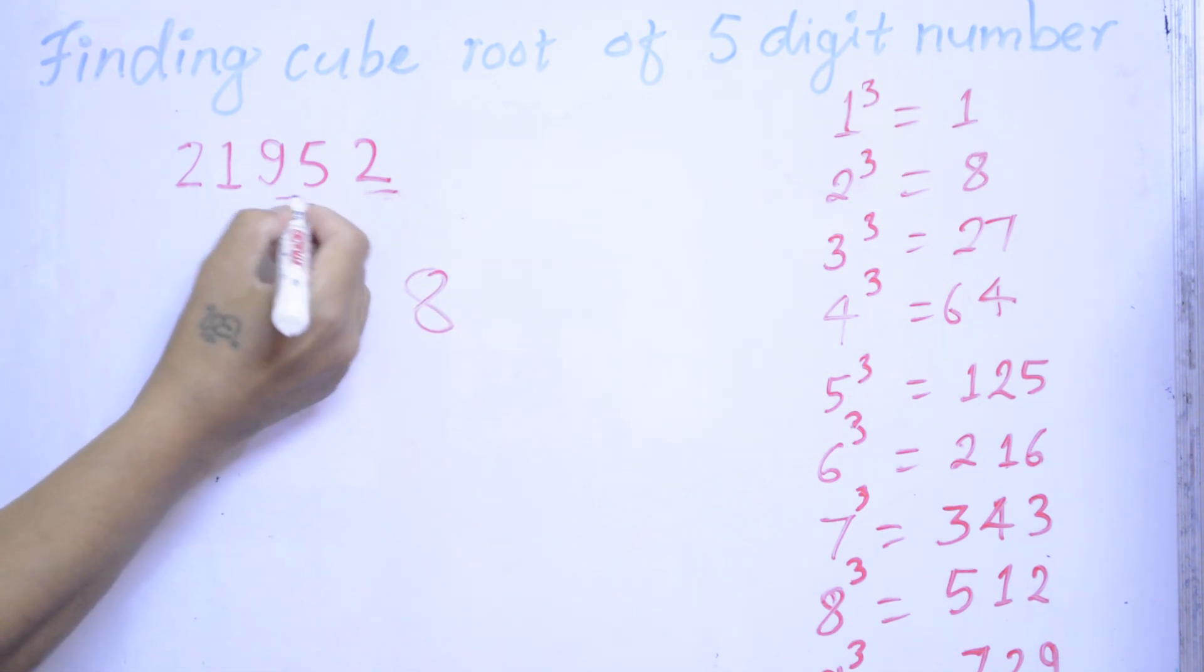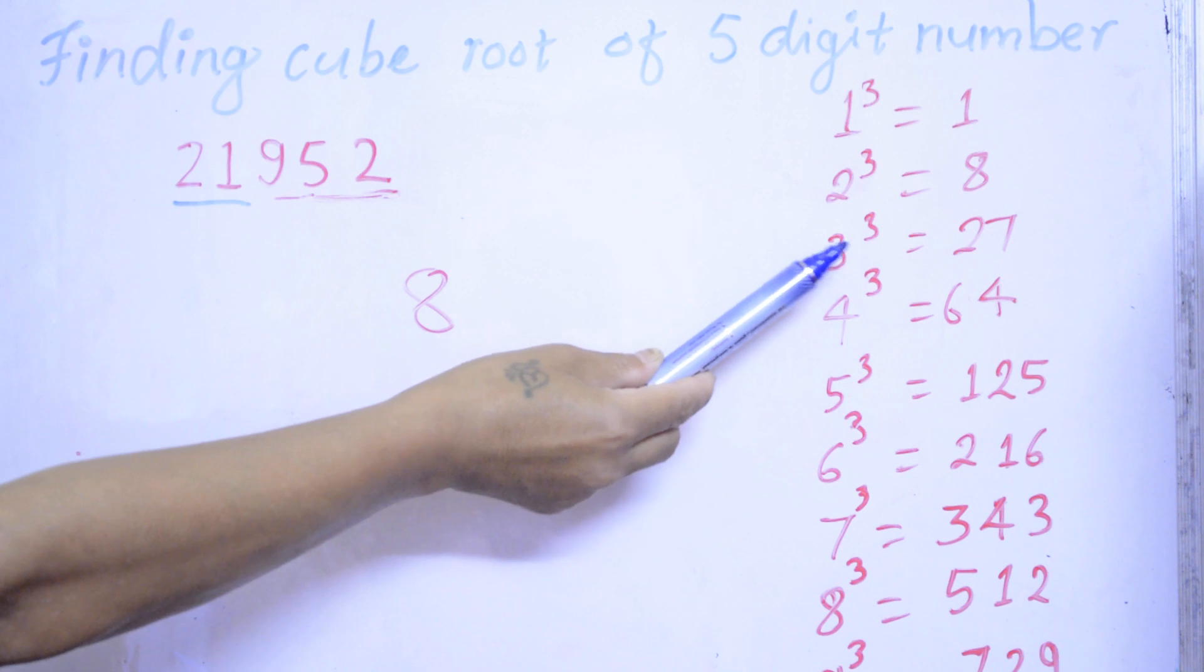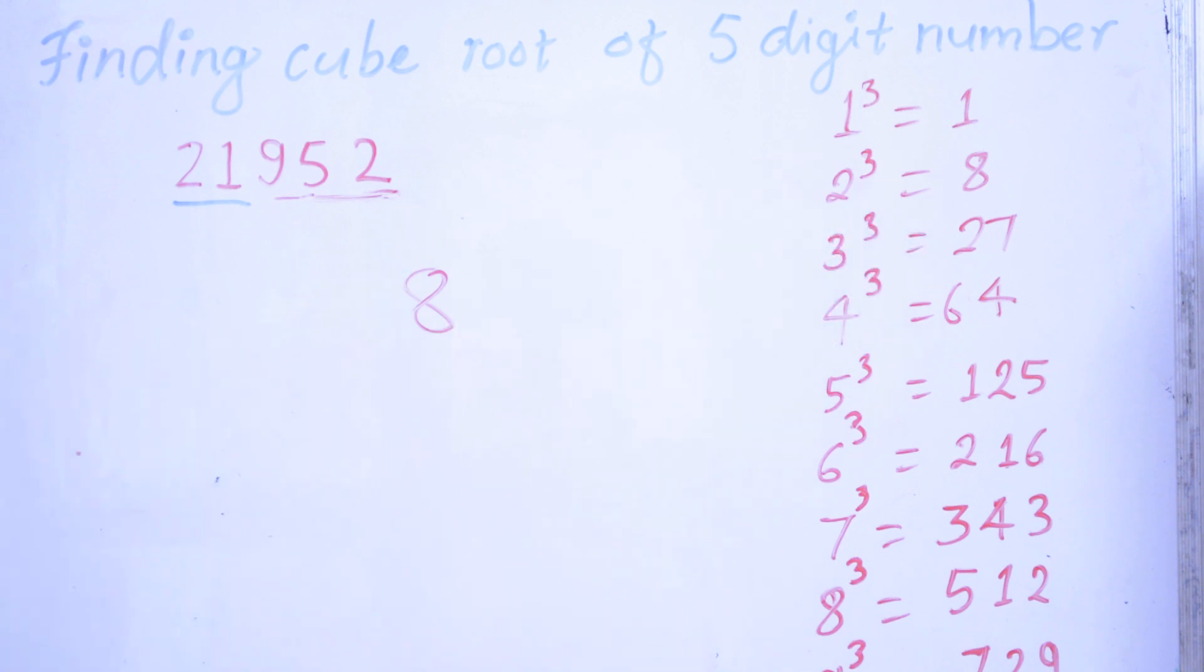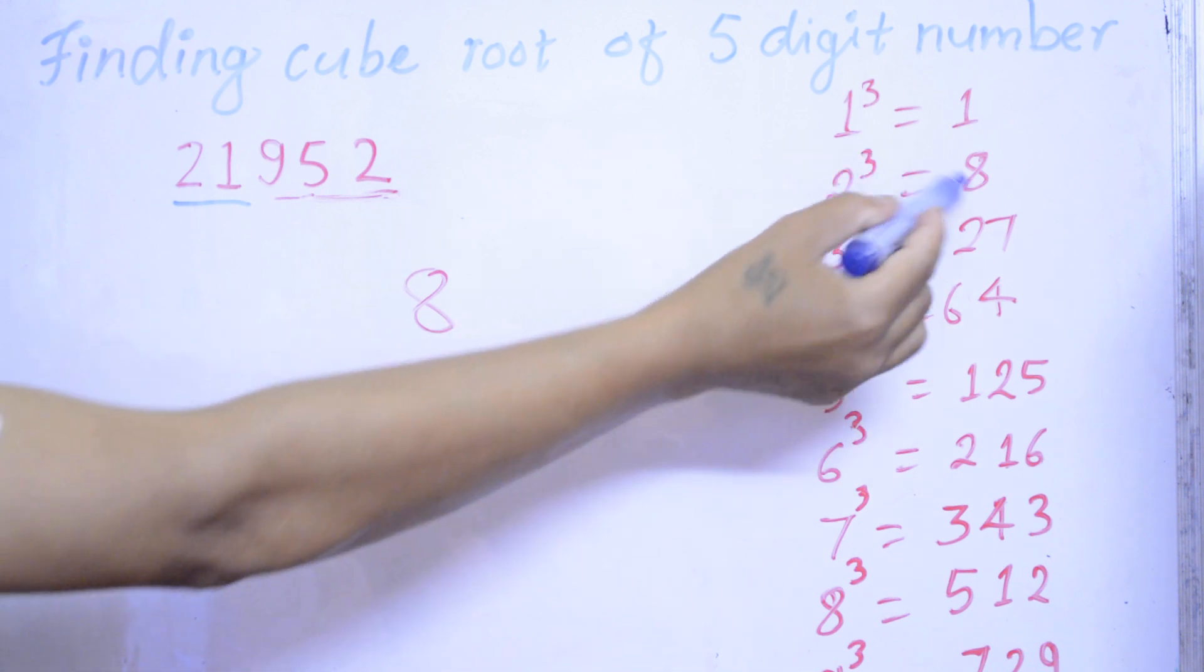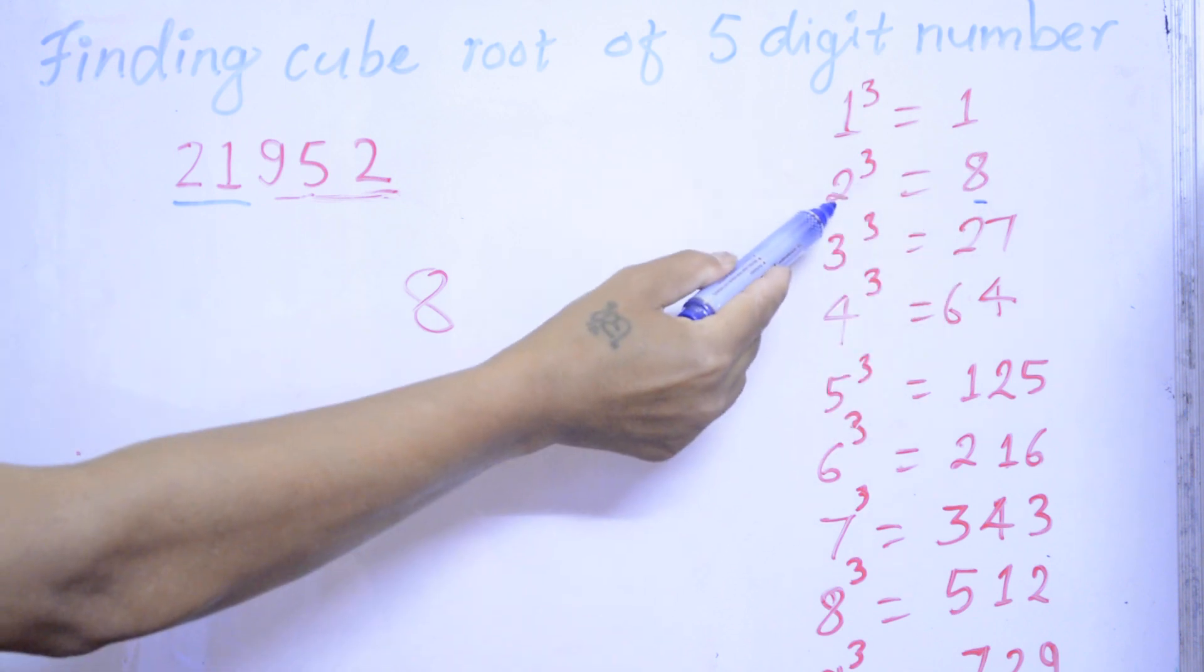Then I have to leave this 3-digit number 925. So we have 21 here. The nearest cube number of 21 is 1827. So 21, the nearest cube number is 8. Now we have to write here the cube roots of 8, which is 2.